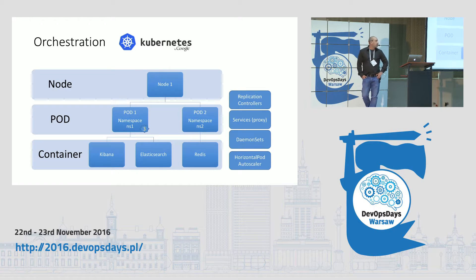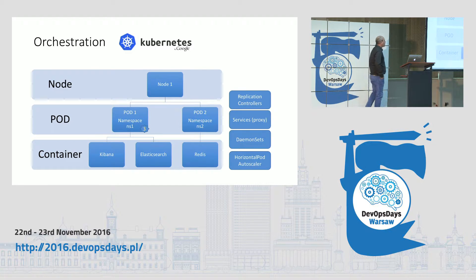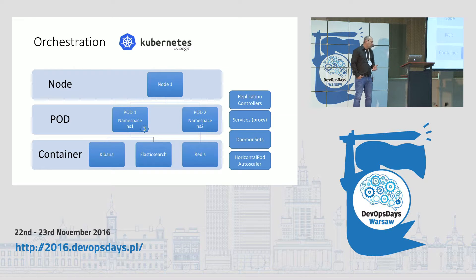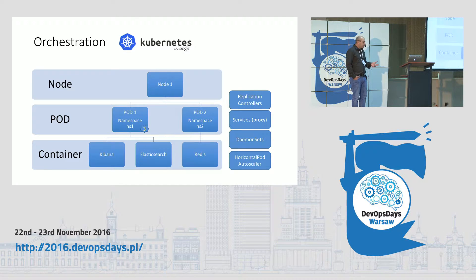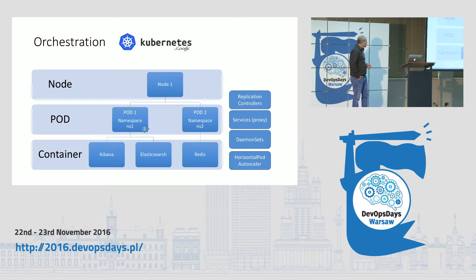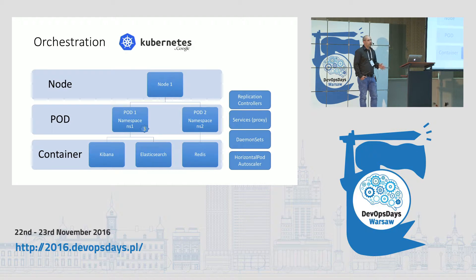Kubernetes has a concept where the atomic unit of deployment is a pod, which is a set of containers. Kubernetes makes sure that the pod runs on a single node. So if we have Kibana and Elasticsearch defined together in one pod for our ELK stack, and we scale it, a replication controller gets a message that we need three of those stacks. It then creates three pods and makes sure that Kibana and Elasticsearch run together on the same node, communicating via local network on different ports.